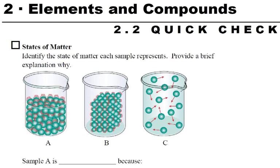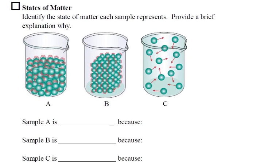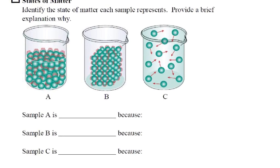I'm going to go over the answers to the 2.2 quick check. The first question is talking about states of matter. Here's some pictures, and identify the state of matter in each sample and provide an explanation why we think that.